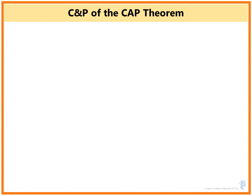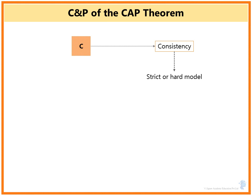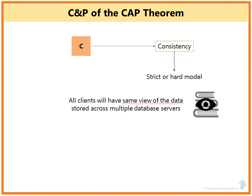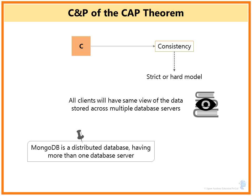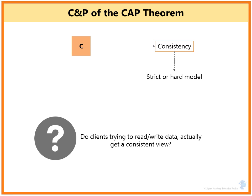The C and P of the CAP theorem: C stands for consistency, which means it follows a strict or hard consistency model. All clients will have the same view of the data stored across multiple database servers. MongoDB is a distributed database with more than one database server. Whether clients reading or writing data get a consistent view is the key question, and MongoDB definitely offers hard consistency by default.